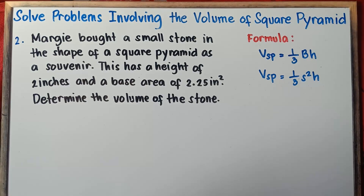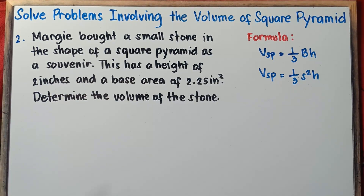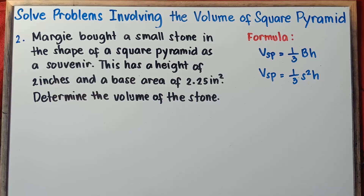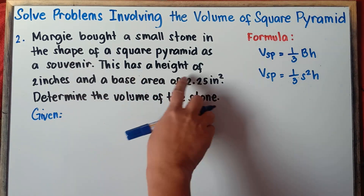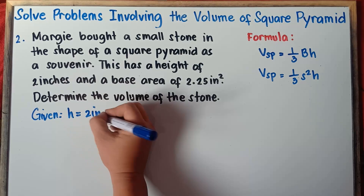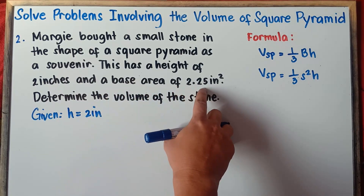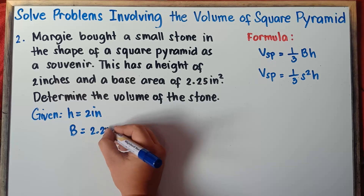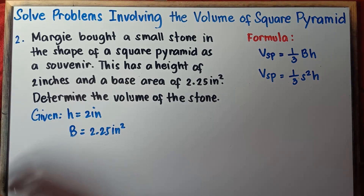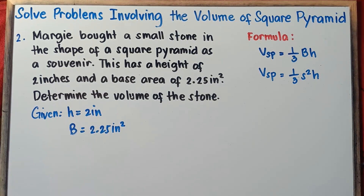Let's work on example number 2. Margie bought a small stone in the shape of a square pyramid as a souvenir. It has a height of 2 inches and a base area of 2.25 square inches. Determine the volume of the stone. First, write down the given: height equals 2 inches, and base area equals 2.25 square inches.